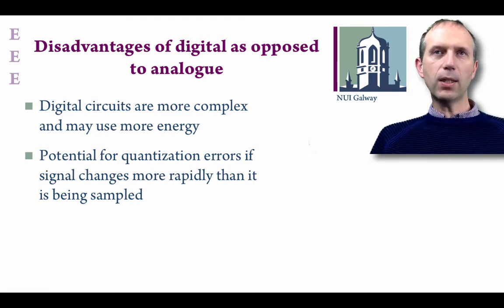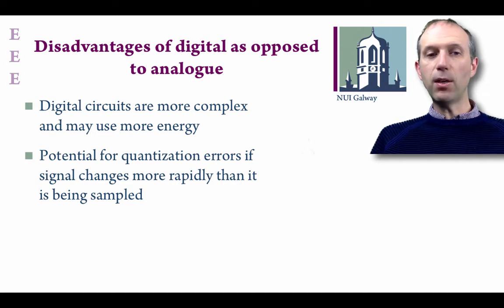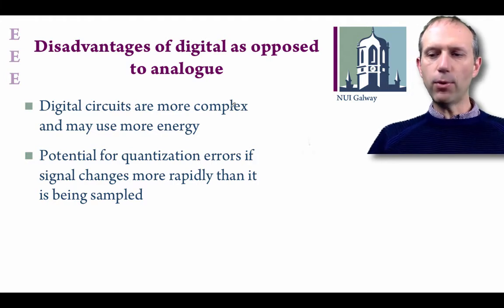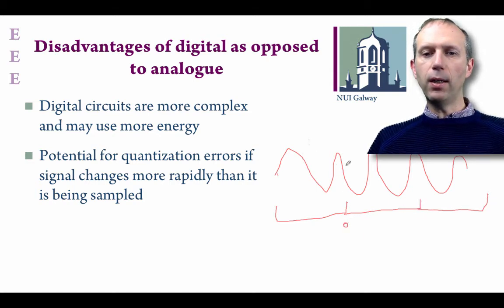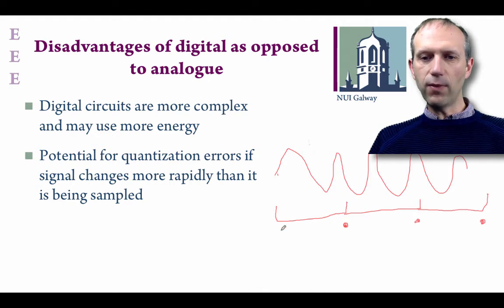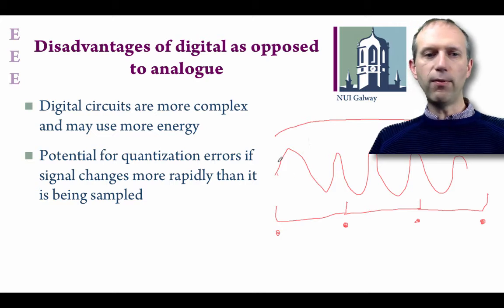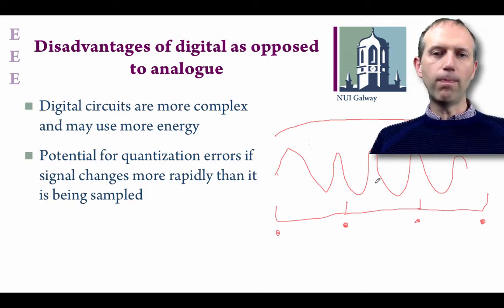Some of the disadvantages of digital versus analog: digital circuits are more complex because you have to do some conversion from analog to digital, and they may use more energy. There is also a potential for errors if the signal changes more rapidly than it's being sampled. For example, imagine some temperature varying over time, but you only sample every five seconds or every hour. If you're sampling at intervals where you're losing out on information happening in the middle, you can have errors. This is a simple example where temperatures are changing over time — because we're taking values at fixed intervals, we miss all the variations in the middle. This would be fine if the temperature changed very gradually, but if you have rapid changes between sampling intervals, that can be an issue — not just for temperatures, but for any signal such as audio or music.